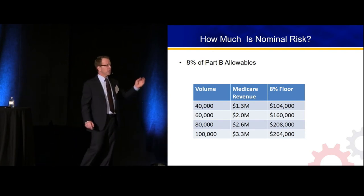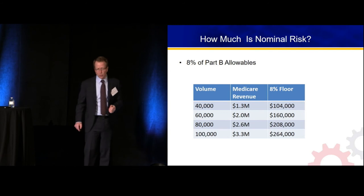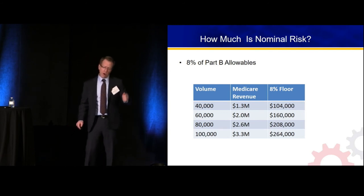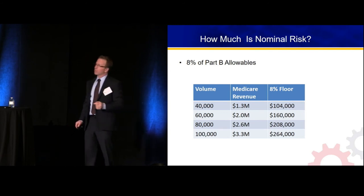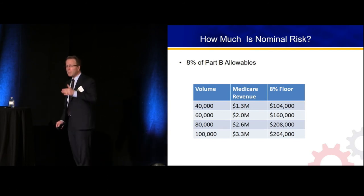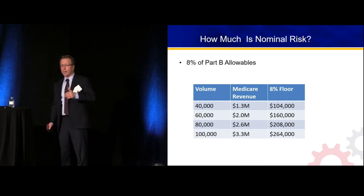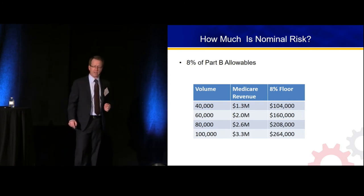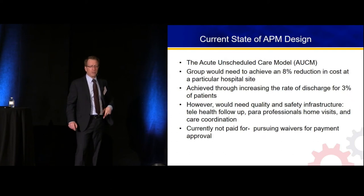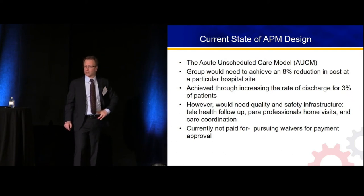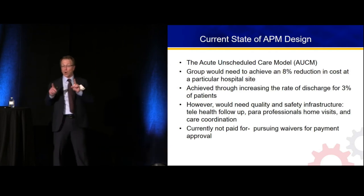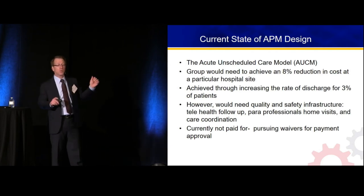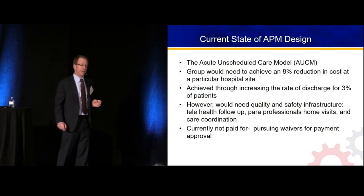For a 40,000-visit community hospital, Medicare revenue usually runs $130 to $145 per patient — roughly $1.3 million in Medicare revenue. Apply that 8% and you need to take a little more than $100,000 of risk. For an 80,000-visit department, a little more than $200,000 at risk. For a 100,000-visit department, about $3 million in Medicare revenue annually and $264,000 of risk.